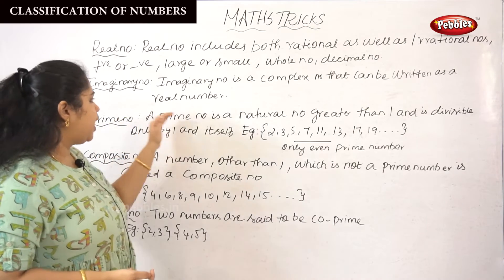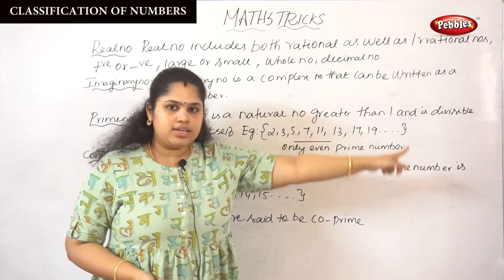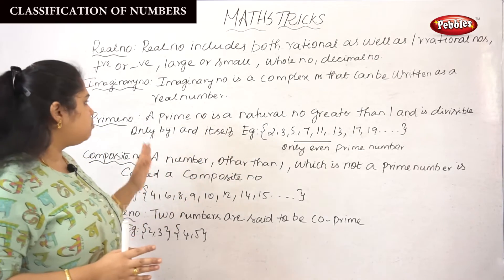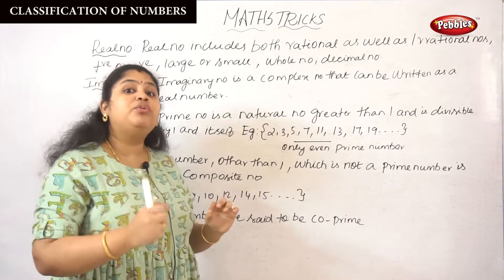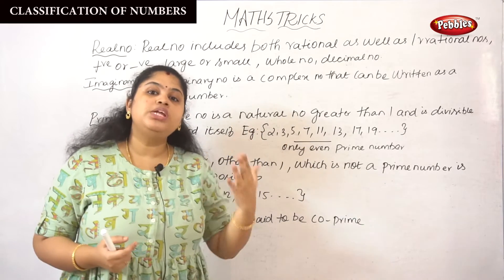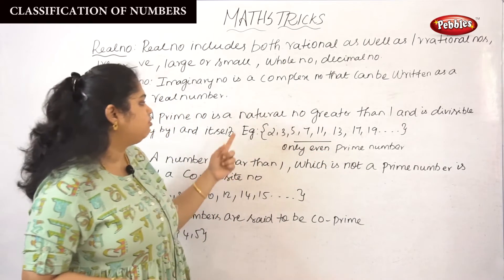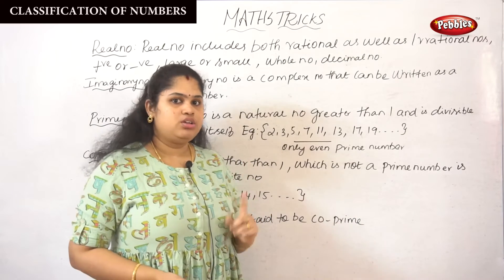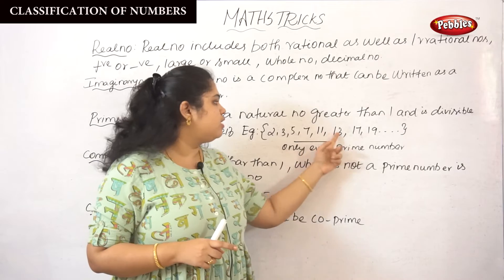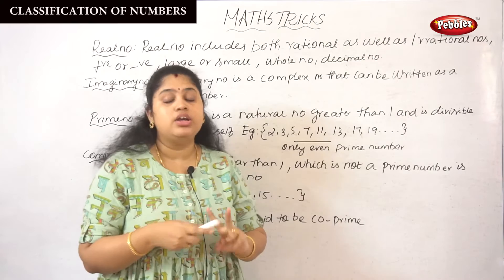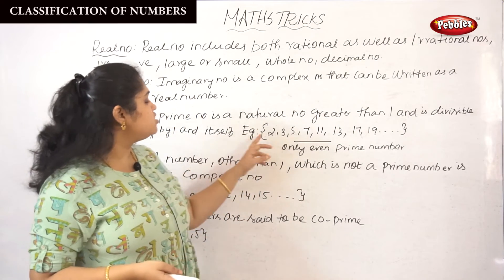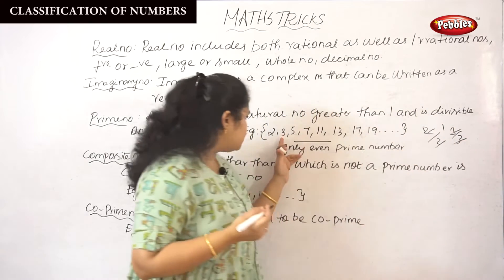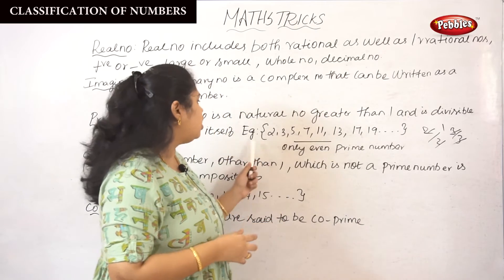Next, prime number. A prime number is a natural number greater than 1 and is divisible only by 1 and itself. For example: 2, 3, 5, 7, 11, 13, 17, 19 are prime numbers. Every one of these is greater than 1, satisfying the first condition. For the second condition, 2 divided by 2 equals 1, and 3 divided by 3 — the same number is divisible by itself. So these are called prime numbers.